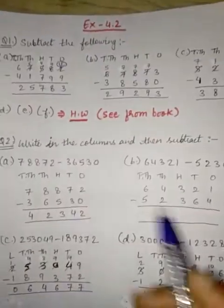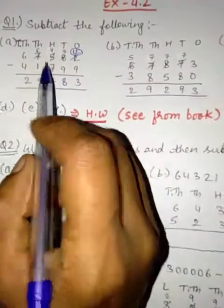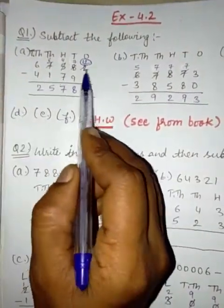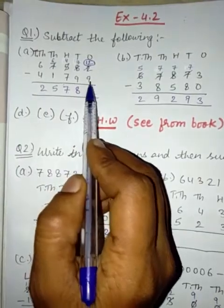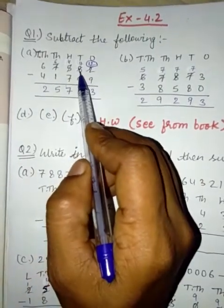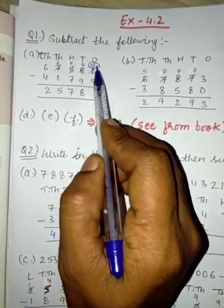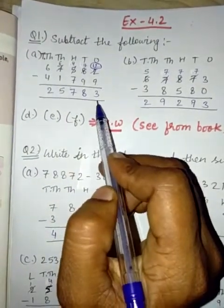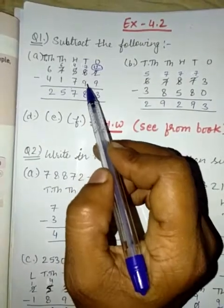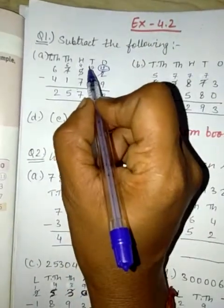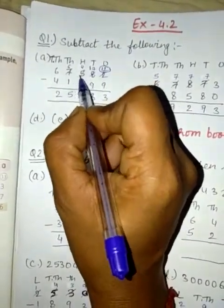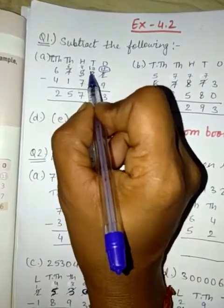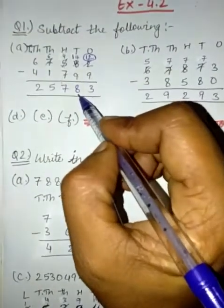Question number A. Subtract the following. Here, see 1's place, it is 2 and 2 is less than 9. So we will borrow 1 from here. So it will become 12 and here it will become 7. So 12 minus 9 is 3. And 7 is less than 9, so again we will borrow 1 from 5. And 5 will become 4 and this 7 will become 17. And 17 minus 9 is 8.